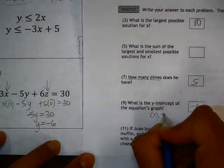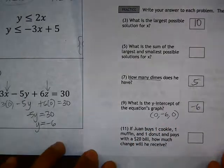Written as a point, it would be 0, negative 6, 0. Alright, let's take a look at number 11.